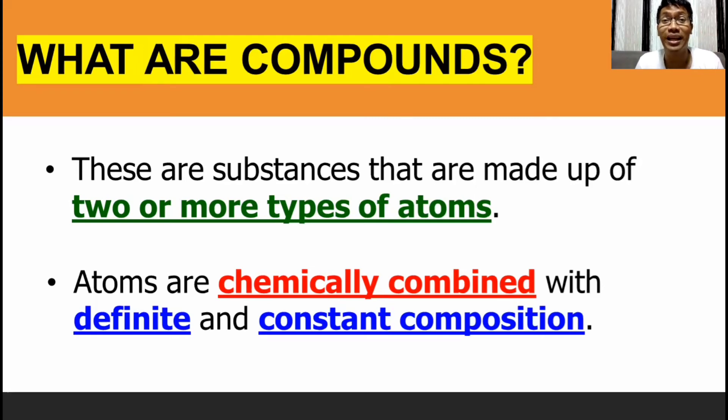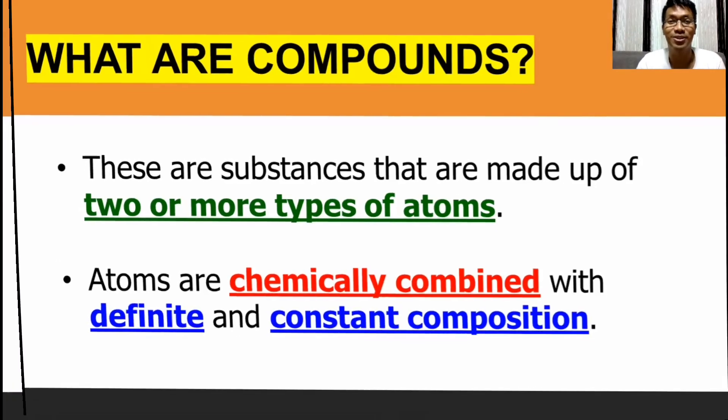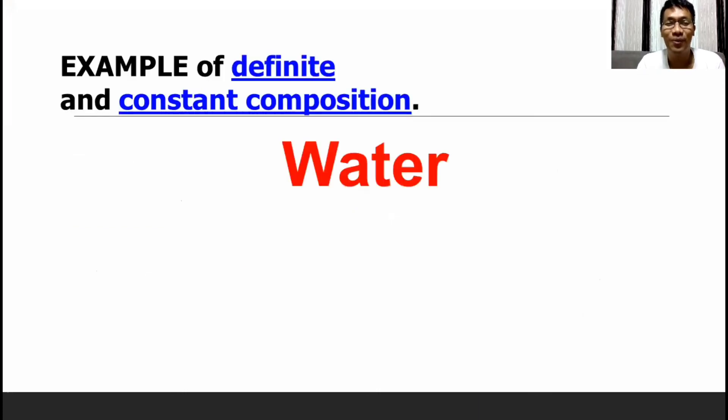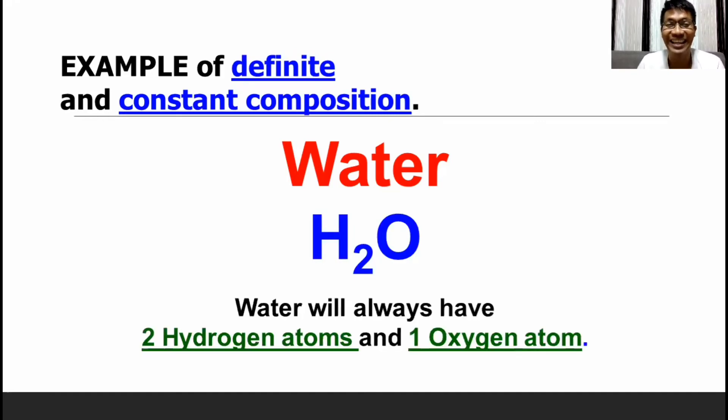Eh sir, ano pong ibig sabihin ng definite and constant composition? For us to understand this, let's have this example. We know that the chemical formula for water is H2O. So, what do we mean by this chemical formula? It means that every molecule of water has two hydrogen atoms and one oxygen atom. And it is always like that. Definite and constant composition.